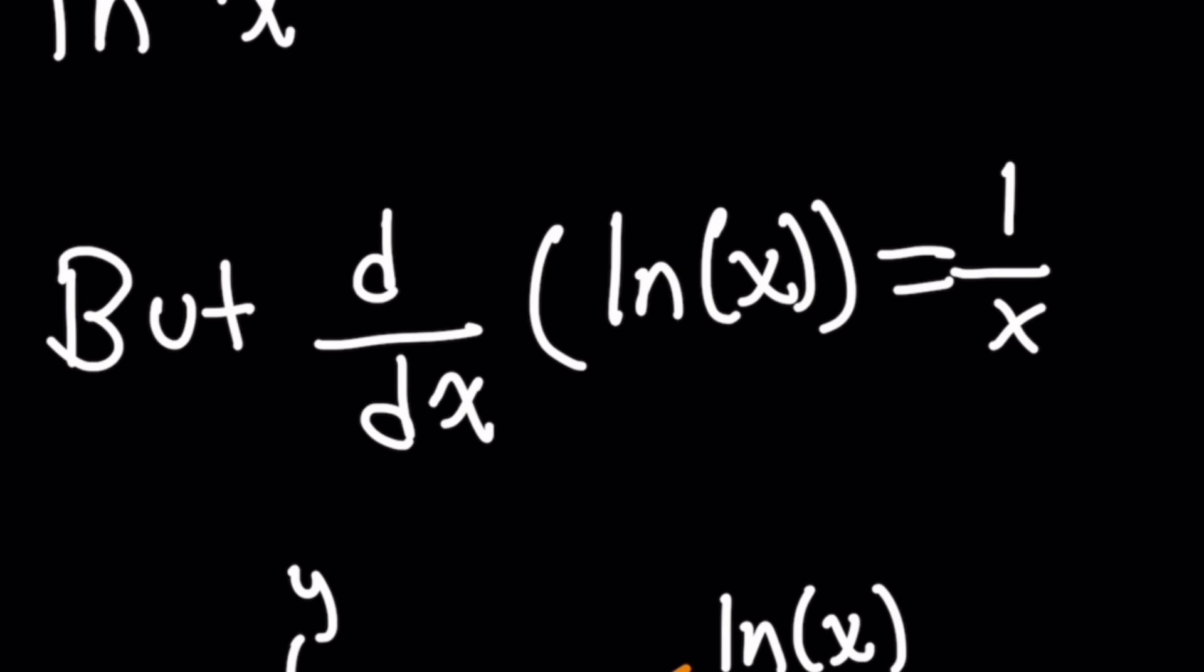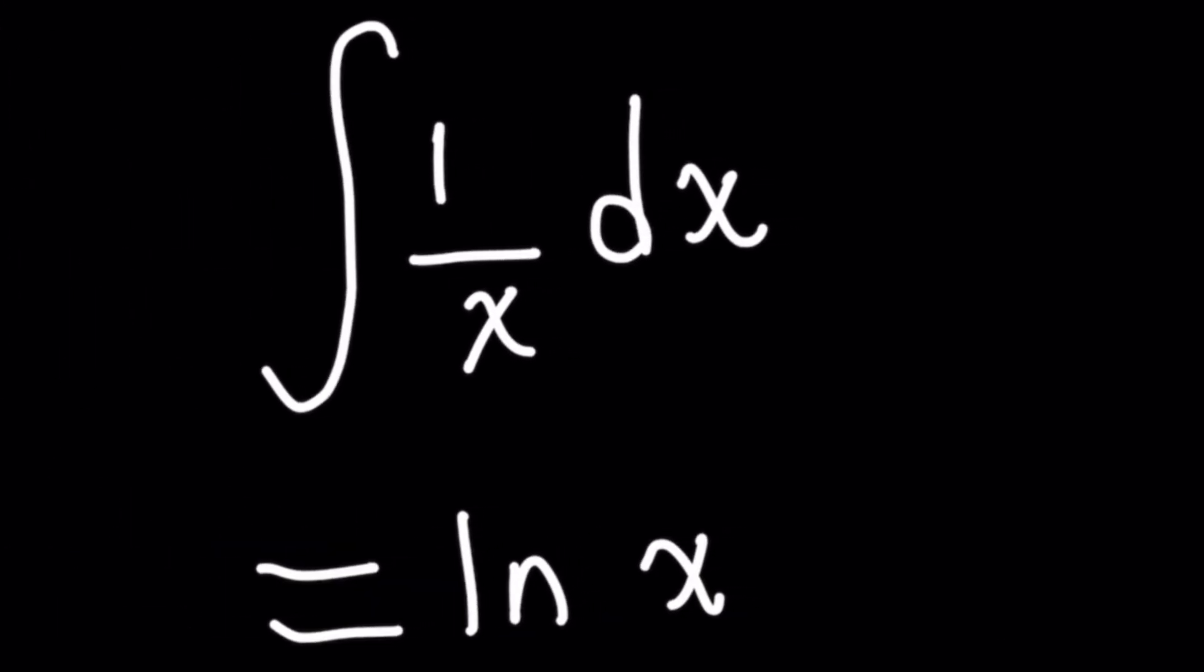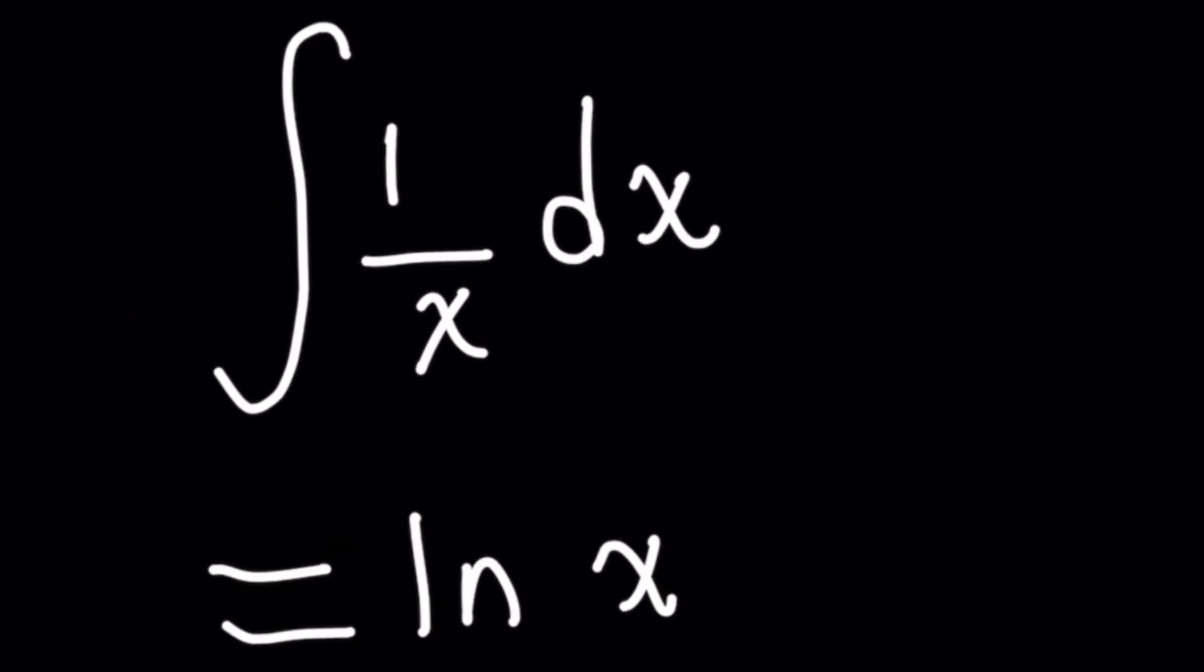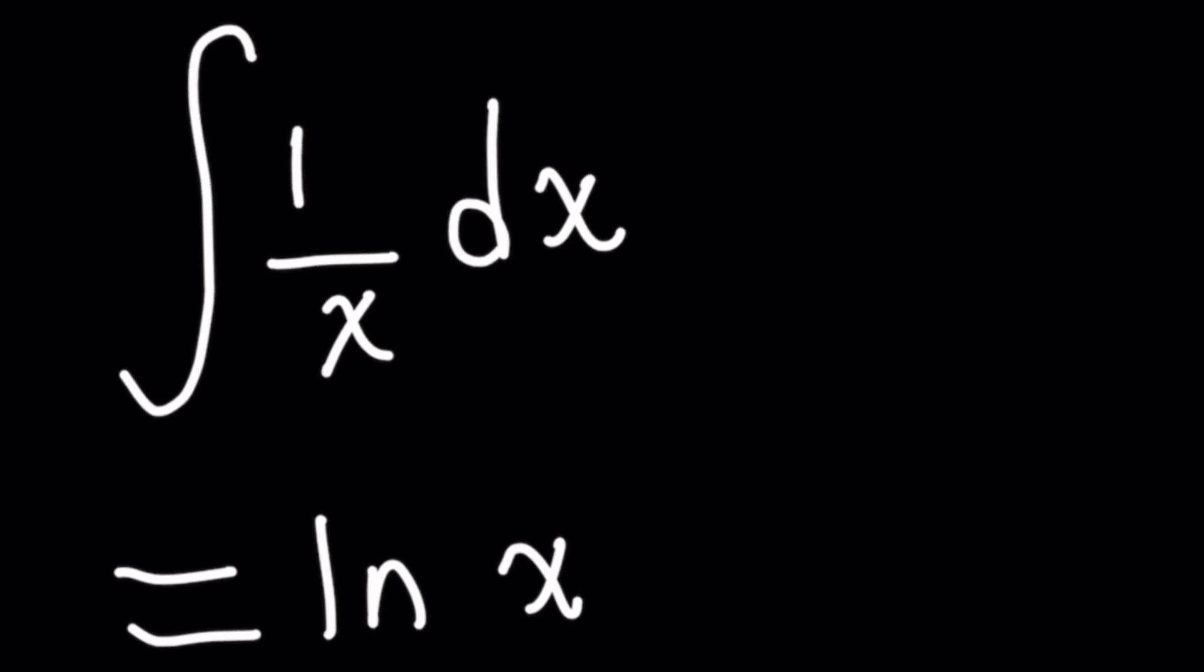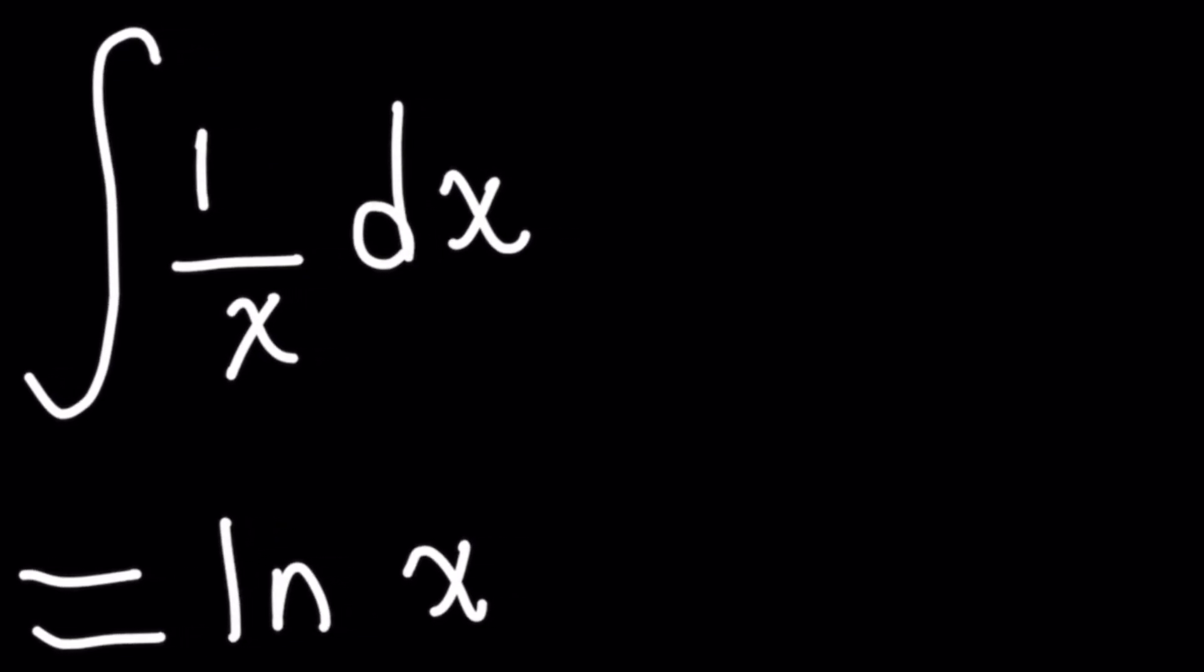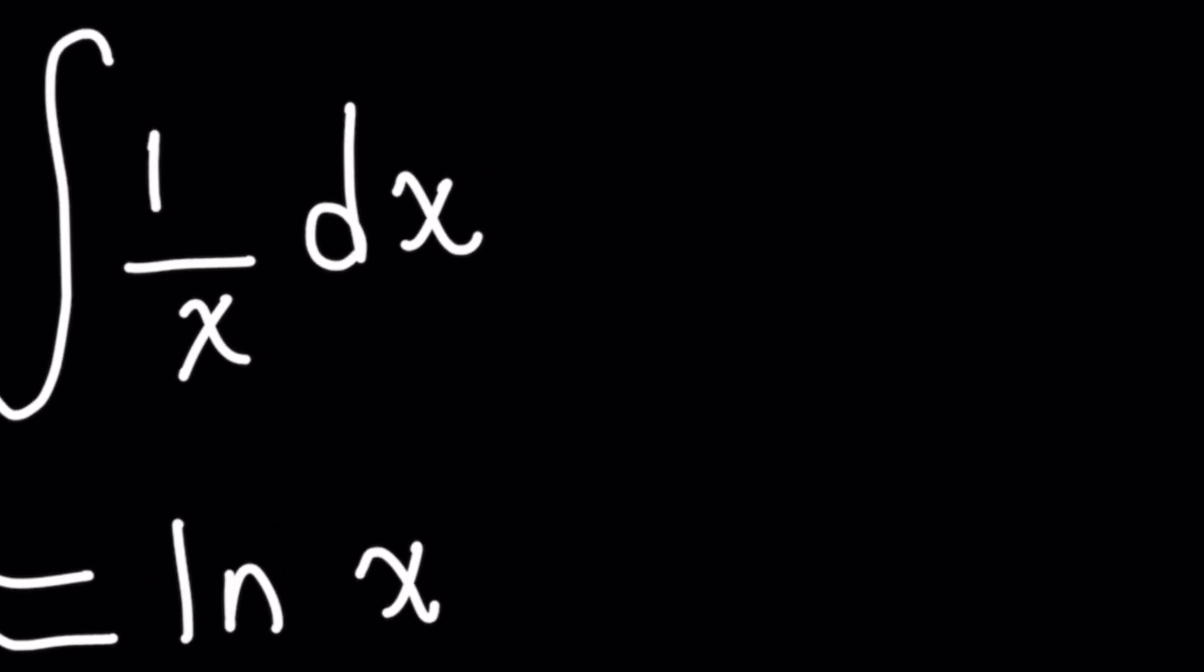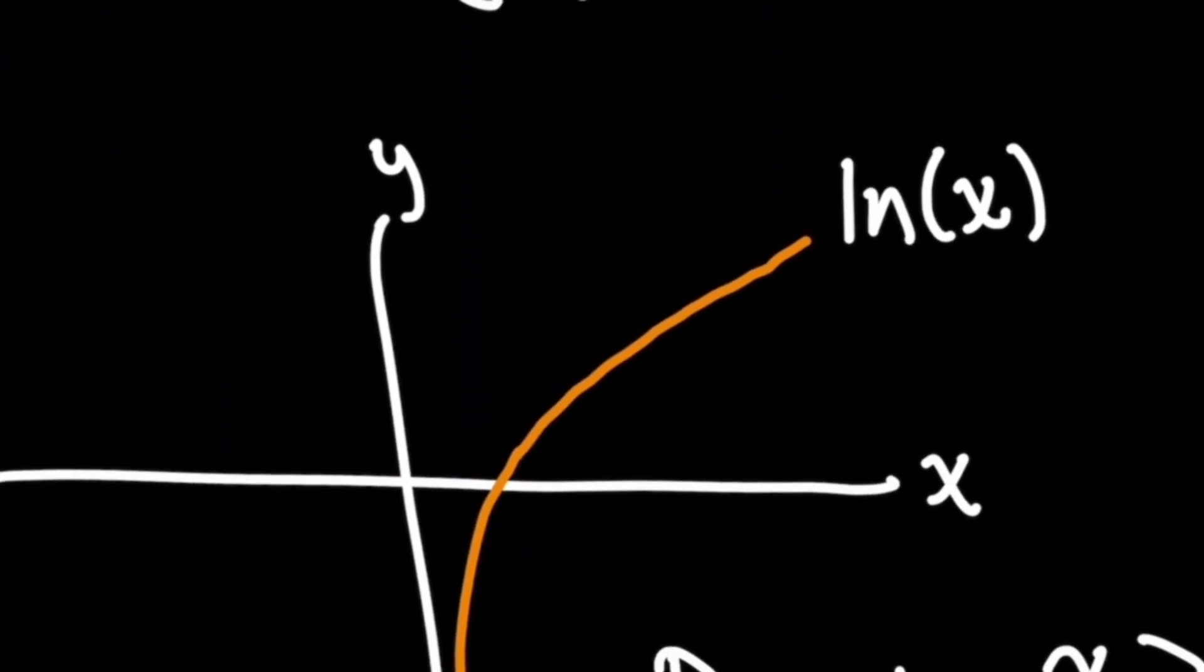So this means that in our original integral, when we're trying to piece back together this original natural log of x function, when integrating one over x, we have to be mindful that the domain had to have already been restricted in the original function. So what do you think we need to do to restrict the value of x when taking the integral?